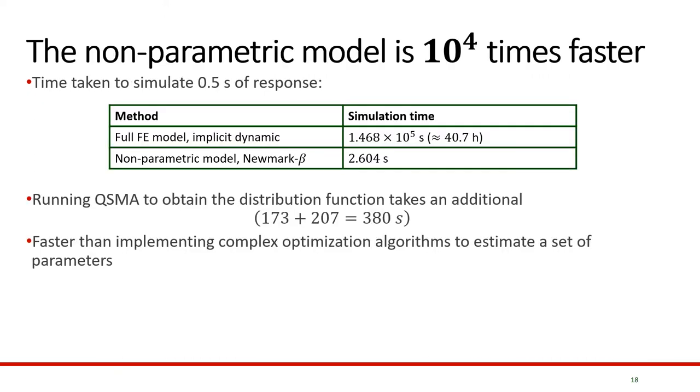The non-parametric model is orders of magnitude faster than integrating the full finite element model. For example, to simulate 0.5 seconds of the response, while the full model would take about 40 hours, using the modal I1 model approach with the non-parametric model, we can get the result in about 3 seconds. Also, for running QSMA to obtain the distribution function, we need about 380 seconds in total, which is still faster than implementing some sort of complex optimization algorithm to estimate a set of parameters.